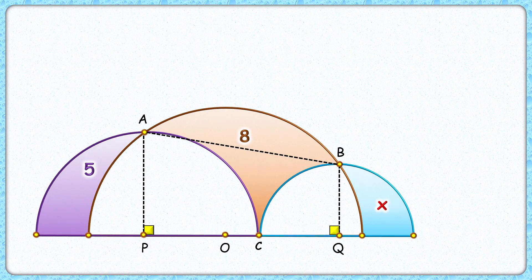Let's check this interesting solution. Let's start by assuming the radius of this purple semicircle is A centimeters, for the blue semicircle it's B centimeters, and for the brown semicircle the radius is R centimeters.